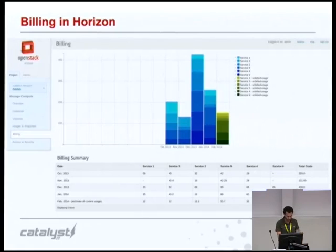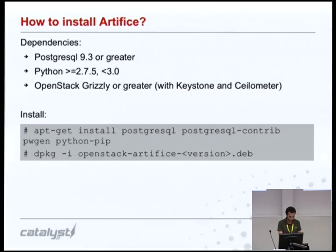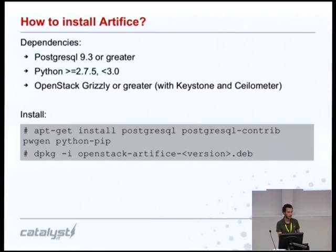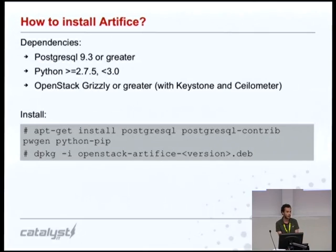Here's a preview of what billing looks like in Horizon if you enable it. We are currently exploring some ideas on how to best present this information for users. To install Artifice, it's super simple. Here are the dependencies, and thanks to the Debian packaging system, all you have to do is satisfy those dependencies and install the Artifice deb package, or pull its source code from GitHub. In the near future, it should also be in a PPA repository to make things even easier.